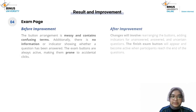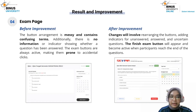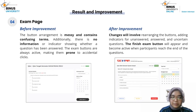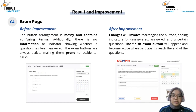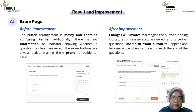Next is the exam page. Problems on this page include messy button layout causing accidental clicks, and the finish exam button being always active. The improvements are to rearrange the buttons, add a confirmation status, and make the finish exam button appear only at the end of the exam.